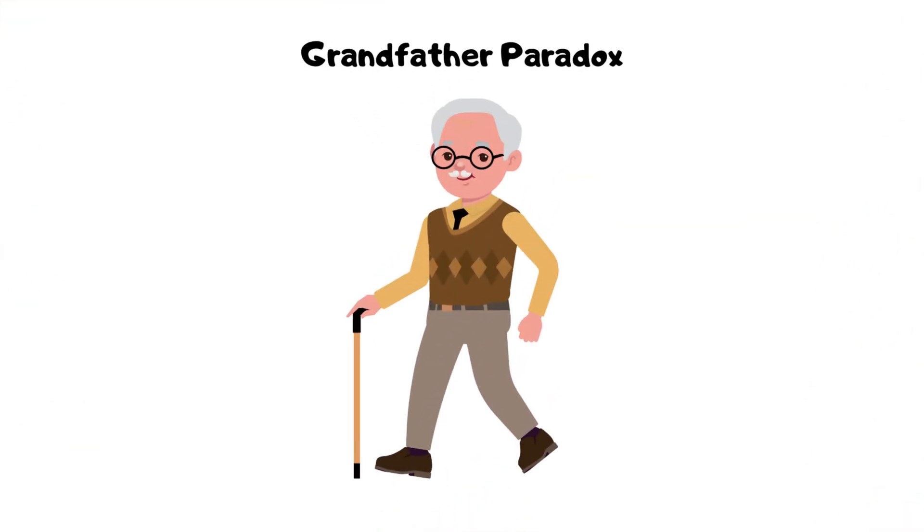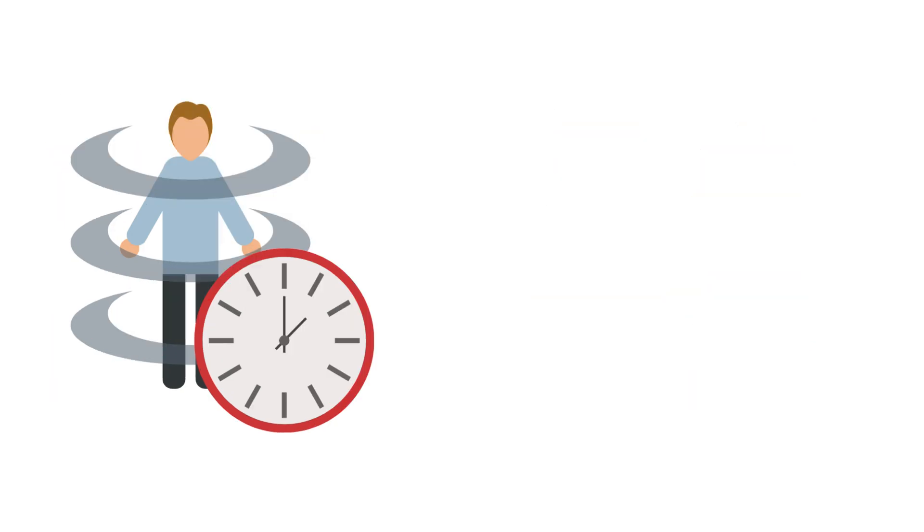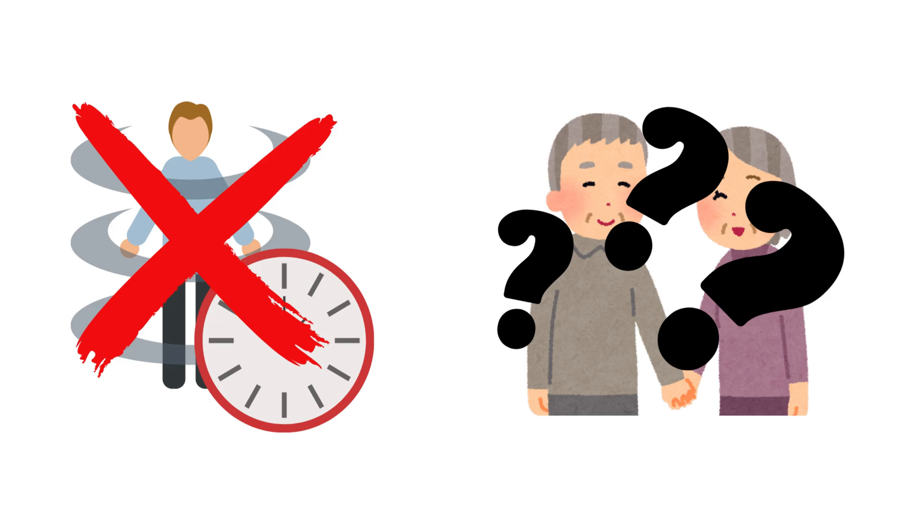Grandfather paradox. If you time travel and prevent your grandparents from meeting, you can't exist, which means you can't go back in time and prevent your grandparents from meeting.